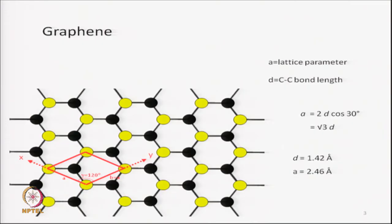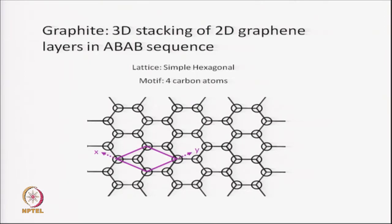In graphite, graphite is nothing but stacking of these graphene layers one above the other. If parallel graphene layers are stacked together in three dimensions we have what is called graphite. The stacking sequence is ABAB — this is important to keep in mind because many times it is incorrectly assumed that the graphite layers are directly one above the other. The second layer is not exactly above the bottom layer but is shifted in its plane.